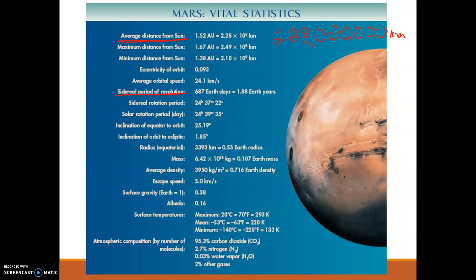A few more things here. Surface temperatures: a maximum of 70 degrees Fahrenheit, minimum of negative 63. And our atmospheric composition here — on Mars there's a really high composition of carbon dioxide at 95.3%. We also have a composition of nitrogen, water vapor, and other gases.